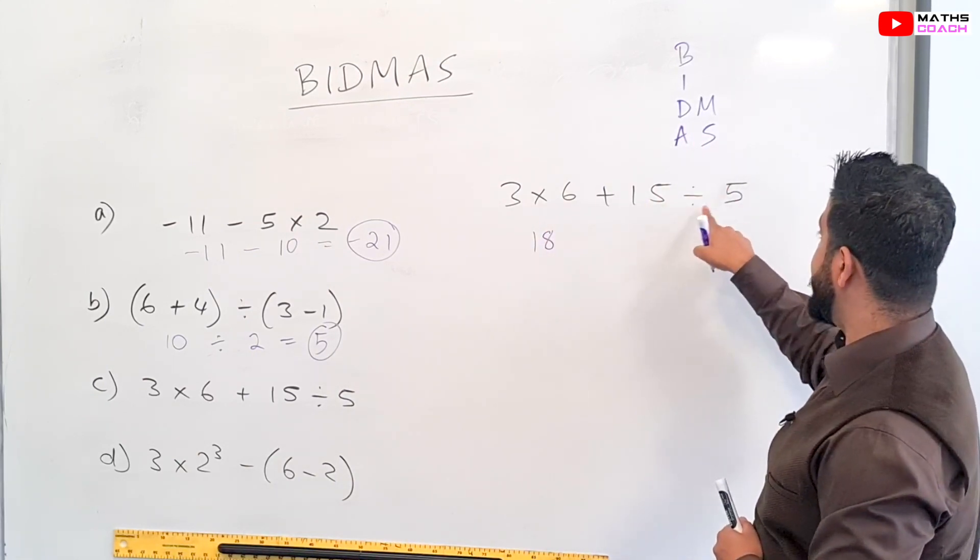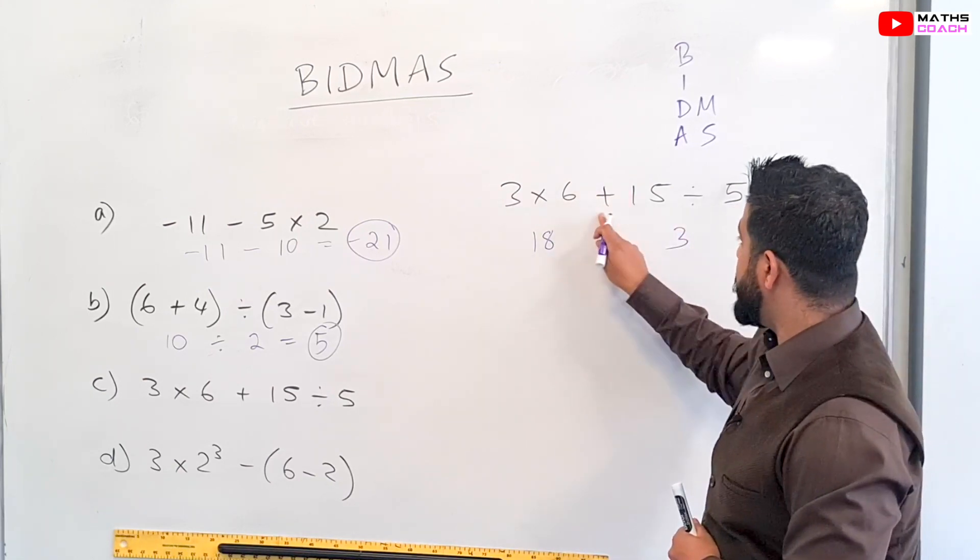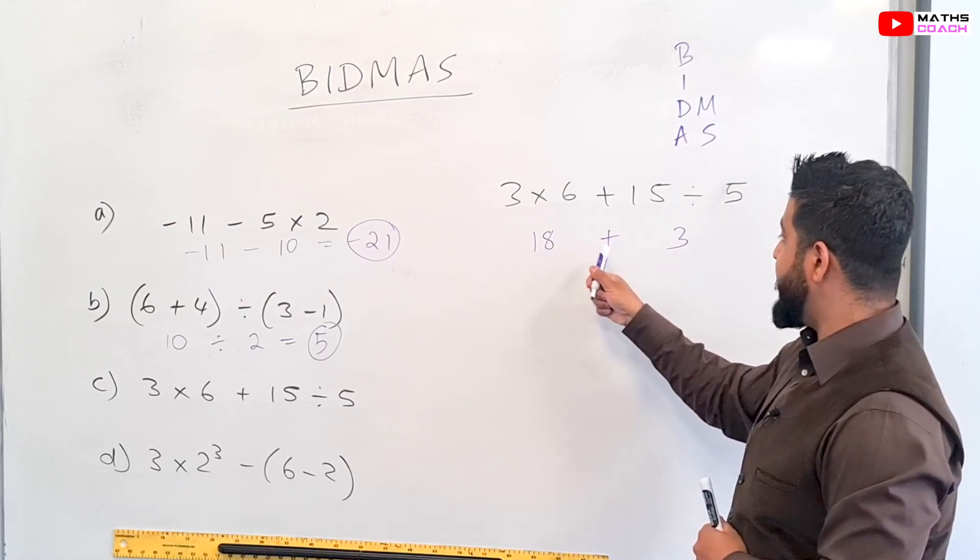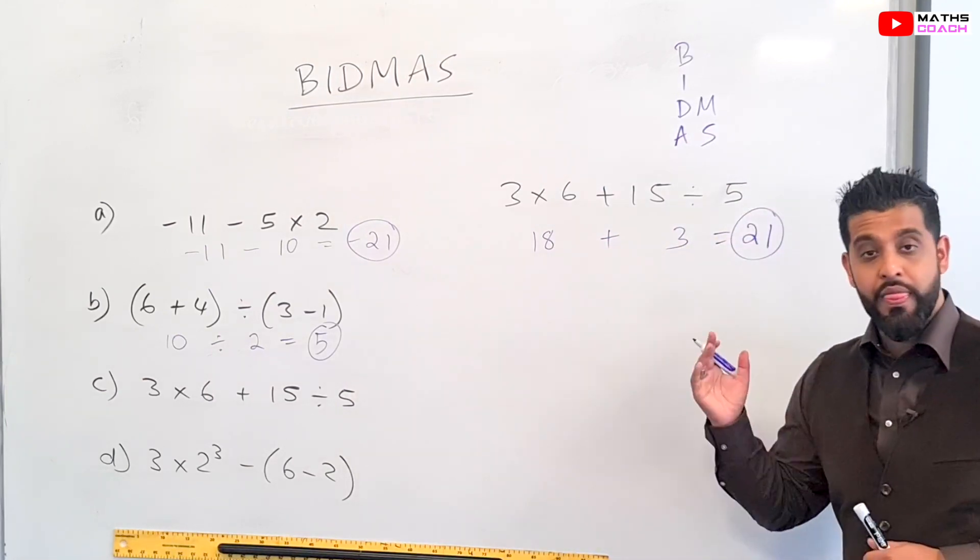And then we do the division. 15 ÷ 5 which is equal to 3. So now all that's left is to put the plus sign in the middle, and we have 18 + 3 which is equal to 21. And that's the answer.